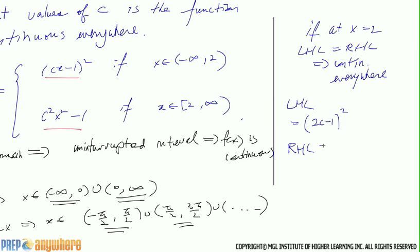Right-hand limit is equal to the one at the bottom. So you get four c squared minus one.